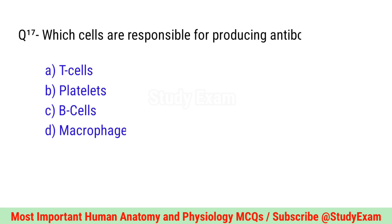Question number seventeen. Which cells are responsible for producing antibodies? Right option is C. B cells.